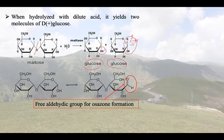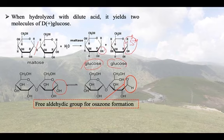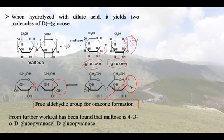From the above, the structure shows that two glucose molecules are combined and at least one of the glucose molecules has a free anomeric carbon. That free anomeric carbon will give us osazone formation and other reducing properties. The other glucose is bound through the glycosidic linkage, giving a free aldehydic group for osazone formation.